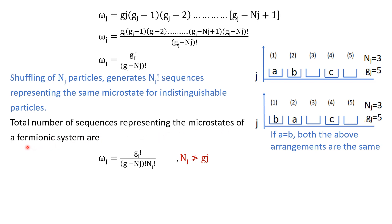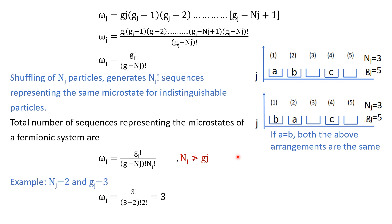So the total number of sequences representing the microstates of our fermionic system is obtained by dividing by nj factorial. Keep in mind that nj can never be greater than gj, because if nj is greater than gj you would have to put more than one particle in an energy state, which is not allowed by the Pauli exclusion principle. For example, I can put at most five particles in five states; if I try to put six particles, I would have to place two in one state, which is forbidden.